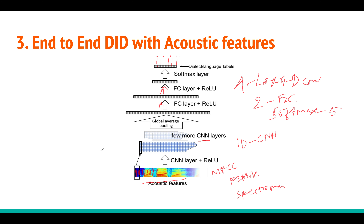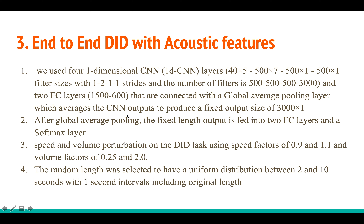Looking at the architecture details: there are 4 convolution layers and 2 fully connected layers. The number of filters are 500, 500, and 3000, with fully connected layer dimensions following. After pooling you get the output vector, which is then classified via softmax. During training they also use speed perturbations to augment the data.